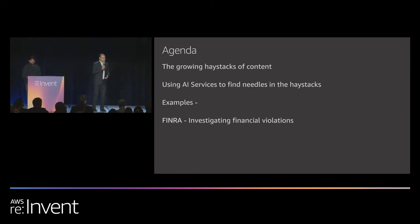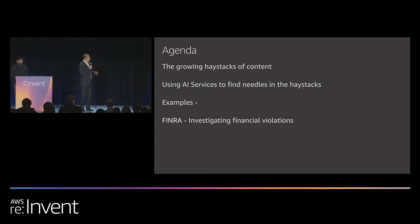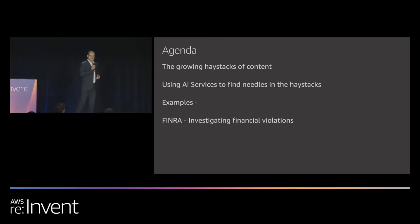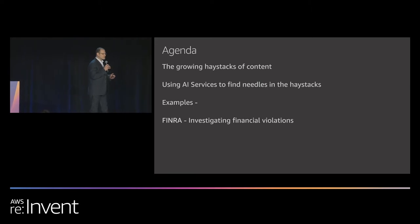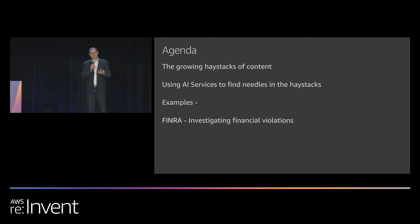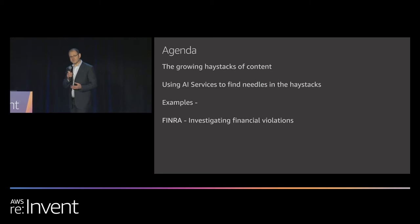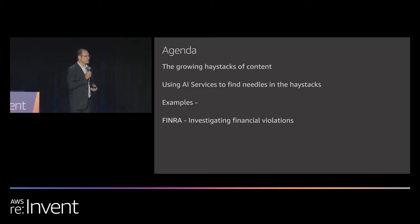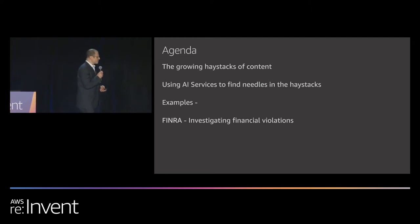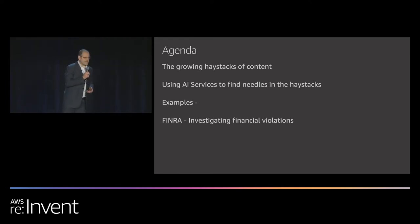What we're going to talk about today is understanding what those growing haystacks are — all the different content types or content repositories we're trying to find information in. Then we'll dive deeper into how we can use AI to find the information we seek, run through some examples of companies already using AI to identify information across various use cases. And then a deep dive with FINRA, an e-discovery use case looking at how we investigate financial violations.